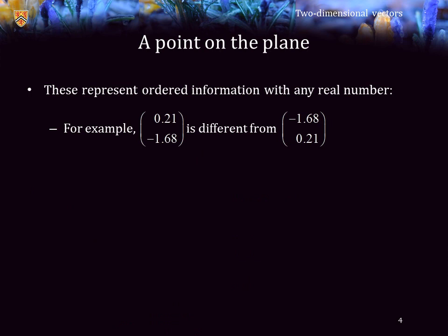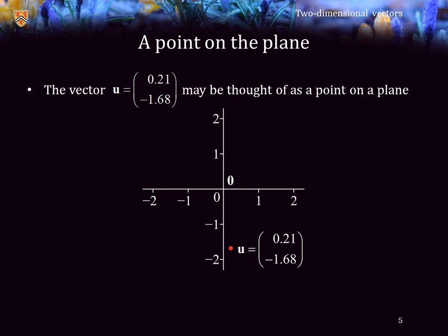It's important to understand that this is ordered information. Therefore, if we swap the entries of a vector, it represents a very different object. For example, the two-dimensional vector u equals (0.21, -1.68) may be thought of as a point on the plane relative to the zero vector or the origin, where the first entry tells us how far we should move to the right of the origin, and the second entry tells us how far to move up from the origin.